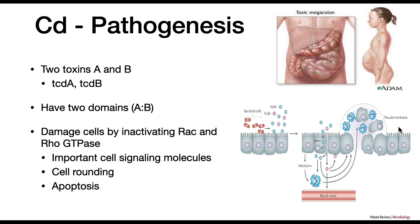For pathogenesis, we're going to talk about one feature of this organism: the toxin that it expresses. The toxic megacolon is the result of the expression of two toxins, TcdA and TcdB. These are classic AB toxins that damage cells by inactivating the RAC and Rho GTPases. These are signaling molecules in the membranes of intestinal cells. Their inactivation causes cell rounding and cell death — apoptosis.